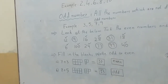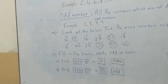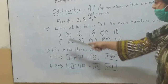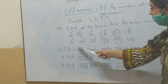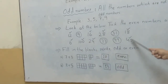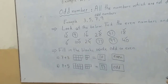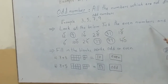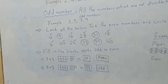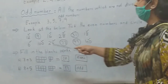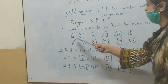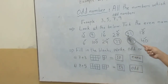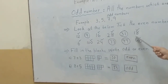Look at the chart. Tick the even numbers and circle the odd numbers. Here is a chart where I have mentioned some numbers. You have to tick the even numbers and circle the odd numbers. The numbers are: twelve, nine, sixteen, twenty-eight, thirty-one, eighteen.